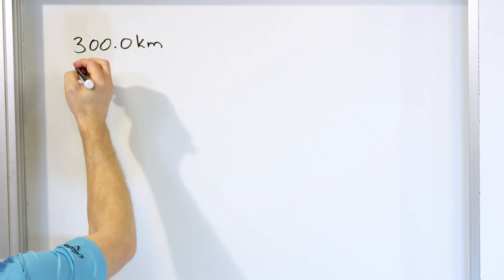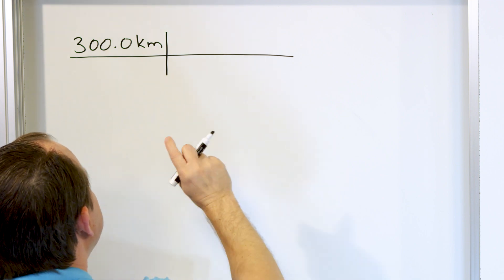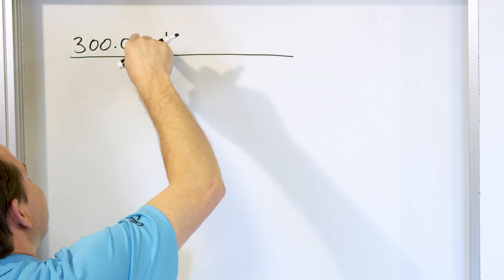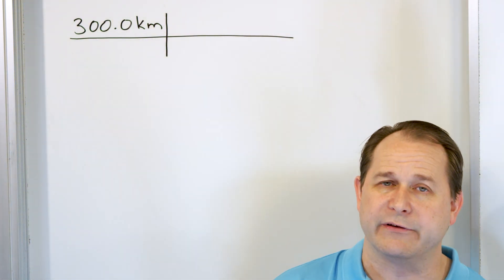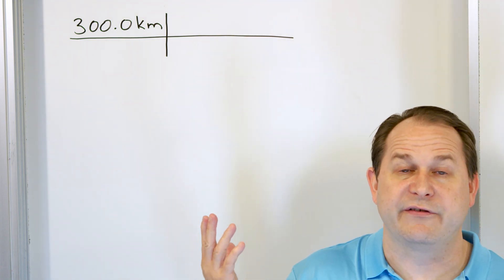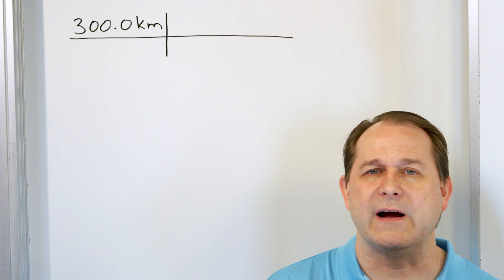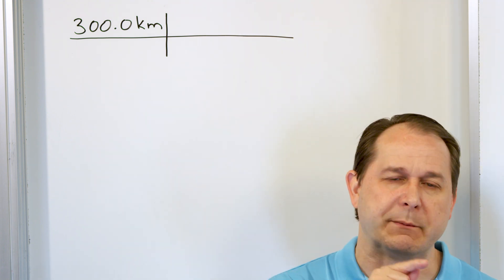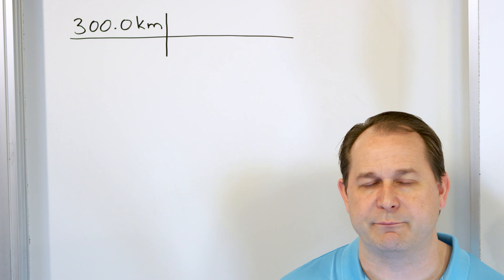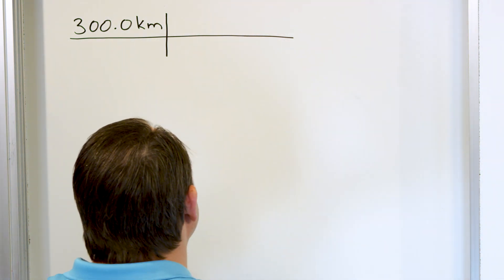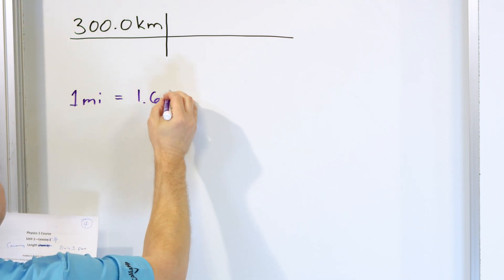Now we know we're going to be converting units here. So what I want you to do is draw a large underline here and draw a vertical bar right here. What we have to do is figure out conversion factors to go from the unit we're starting from — kilometers — and ending up in the unit we want. Part A is we want to convert to miles. When you look in any physics book, chemistry book, or even math book, you can usually find a table of conversion factors in the very front. We want to go from kilometers to miles, so look up that unit conversion.